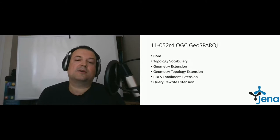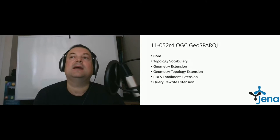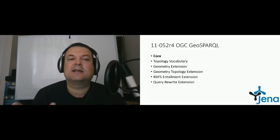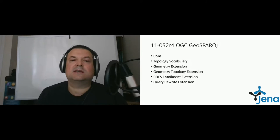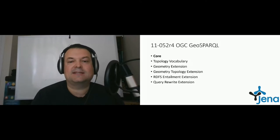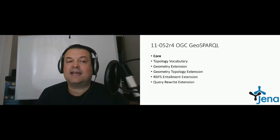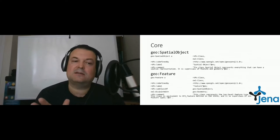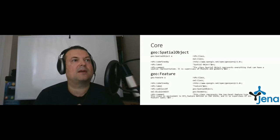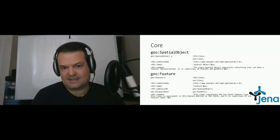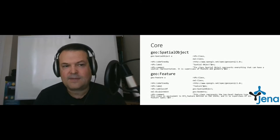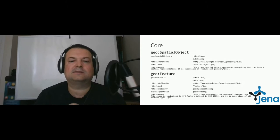Let's start with the core. The core is really the basic vocabulary in the GeoSPARQL standard. It defines a spatial object class, which represents everything that has a spatial component or spatial representation. The second class is feature, which is a subclass of a geospatial object. Keep in mind, feature here is a conceptual class — it doesn't have any geometry representation attached to it. That's the core of the GeoSPARQL OGC standard.